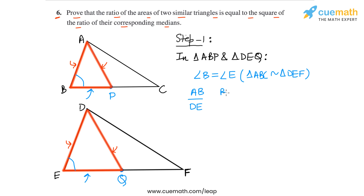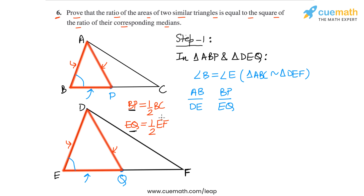Can we say that AB/DE and BP/EQ are equal? Yes, because BP is simply half of BC and EQ is simply half of EF. So the ratio BP by EQ equals BC by EF. But BC by EF we already know equals AB by DE, again because triangles ABC and DEF are similar. So AB by DE equals BP by EQ.